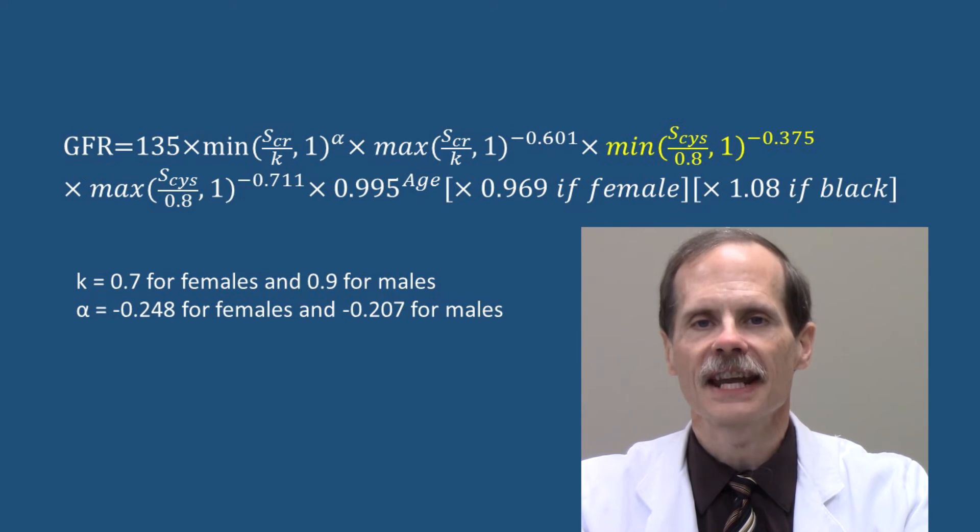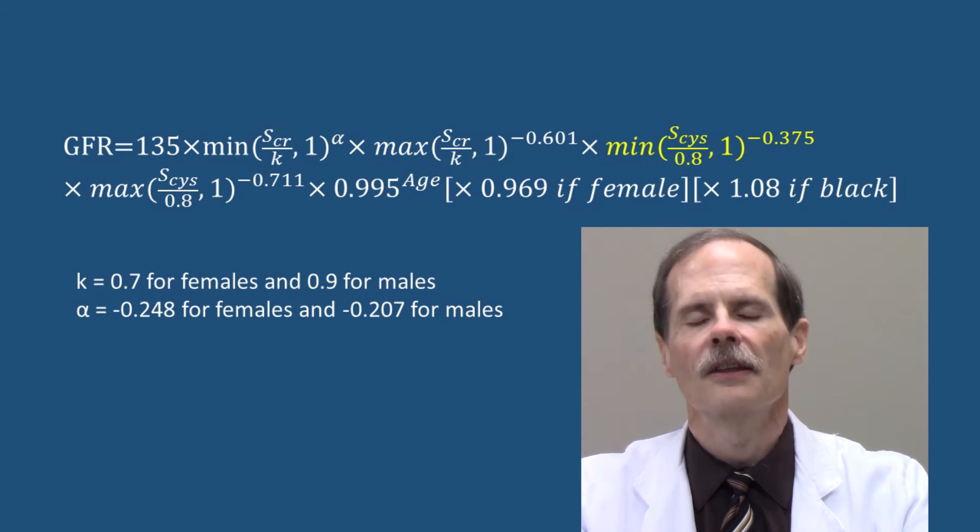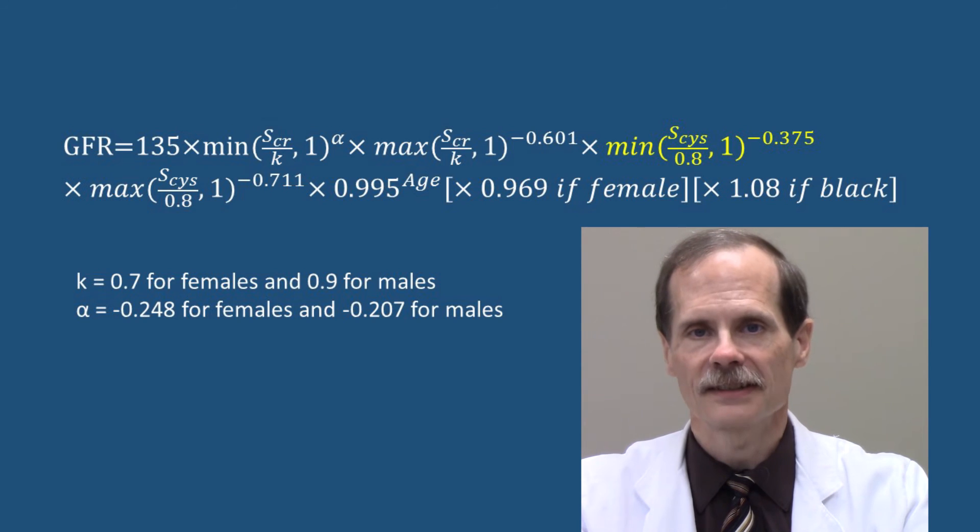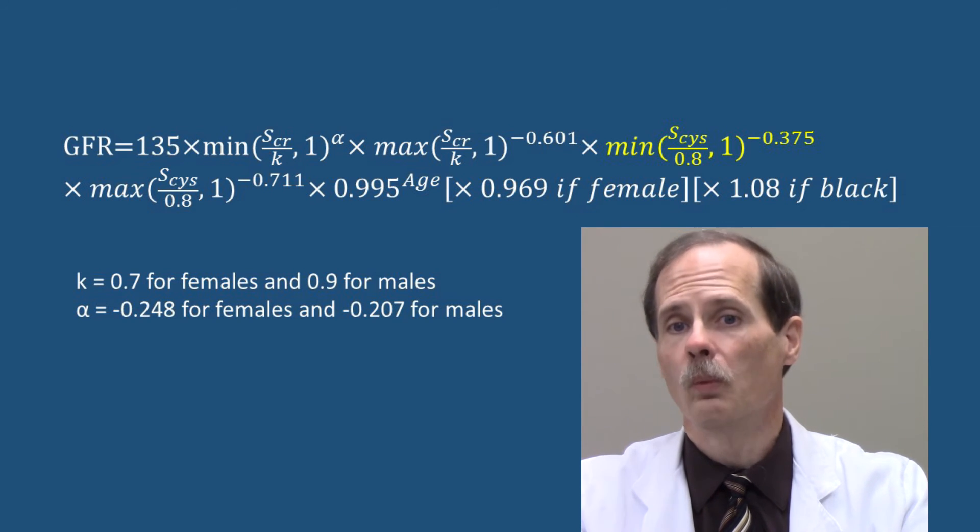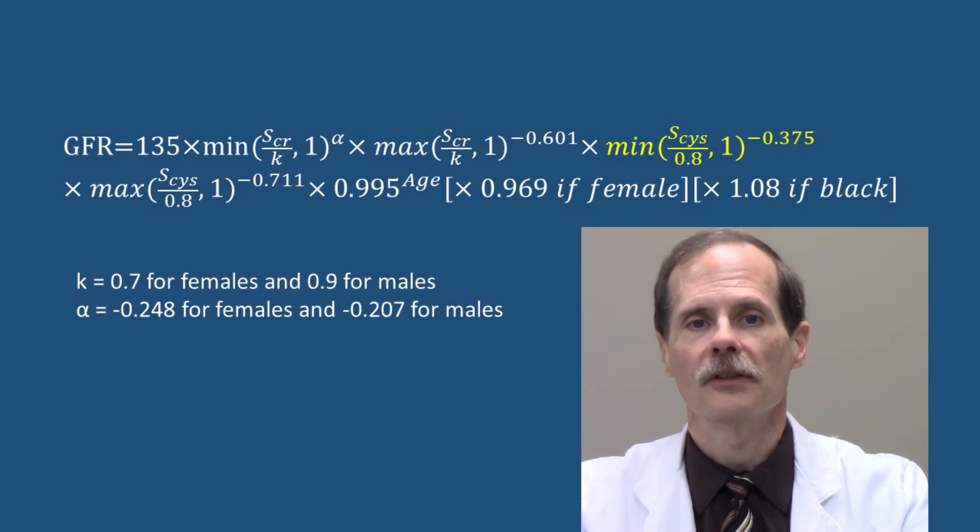The clinician does the same thing with the serum Cystatin C concentration. The lower value, either Cystatin C divided by 0.8 or one, is raised to the power of negative 0.375.